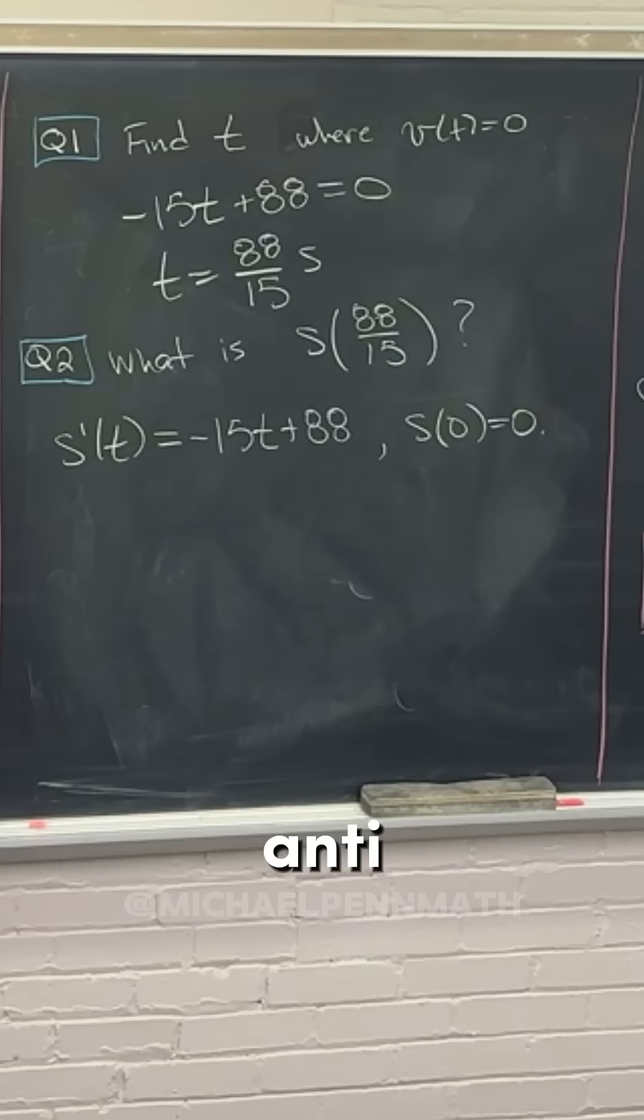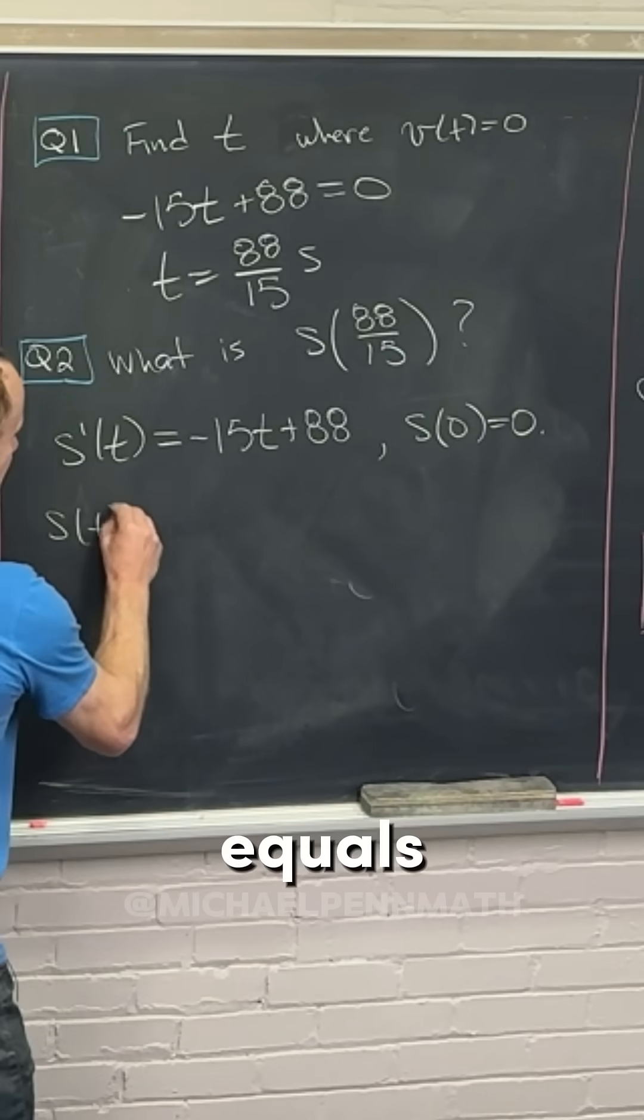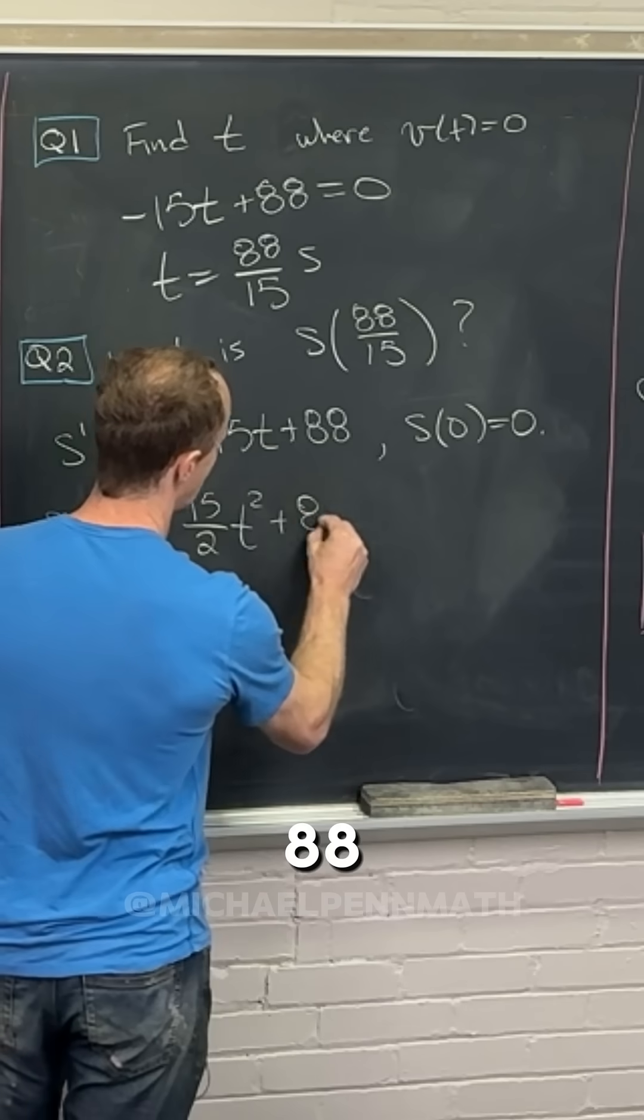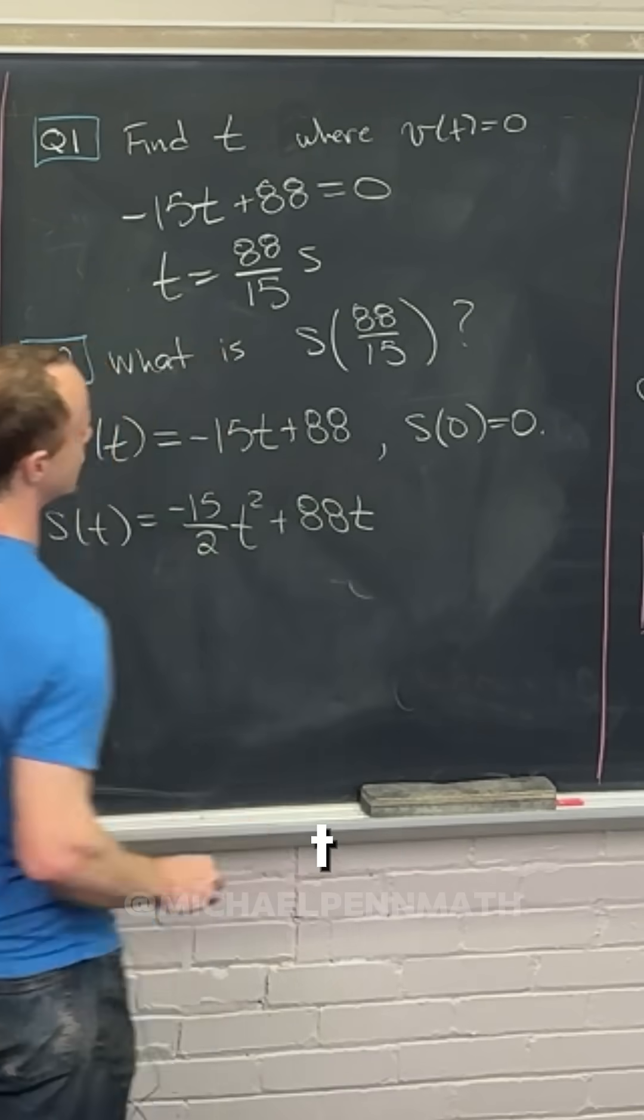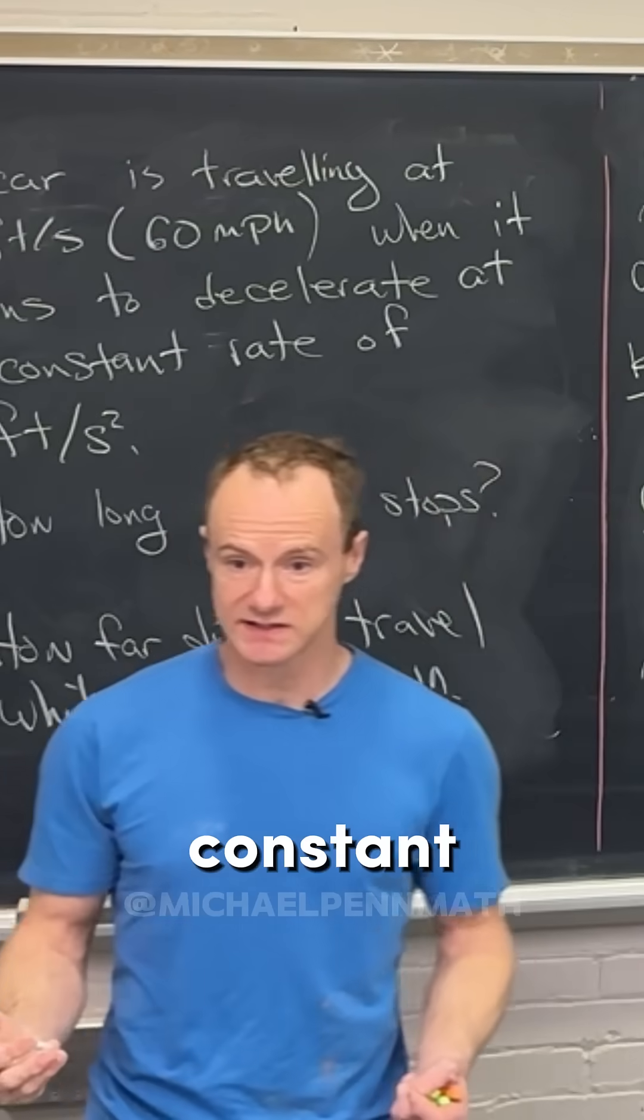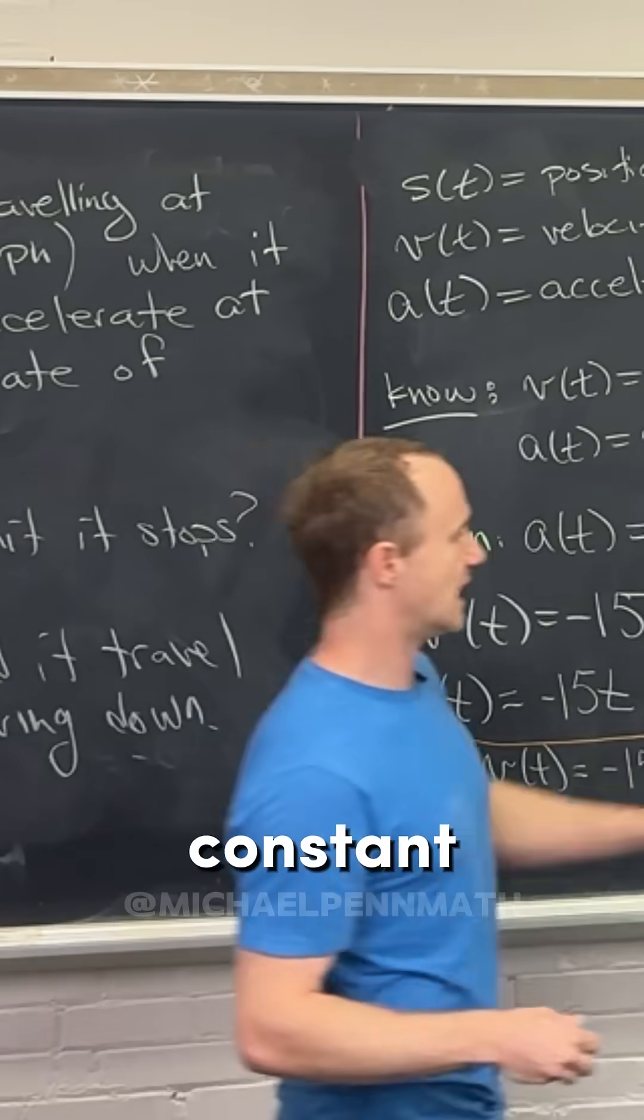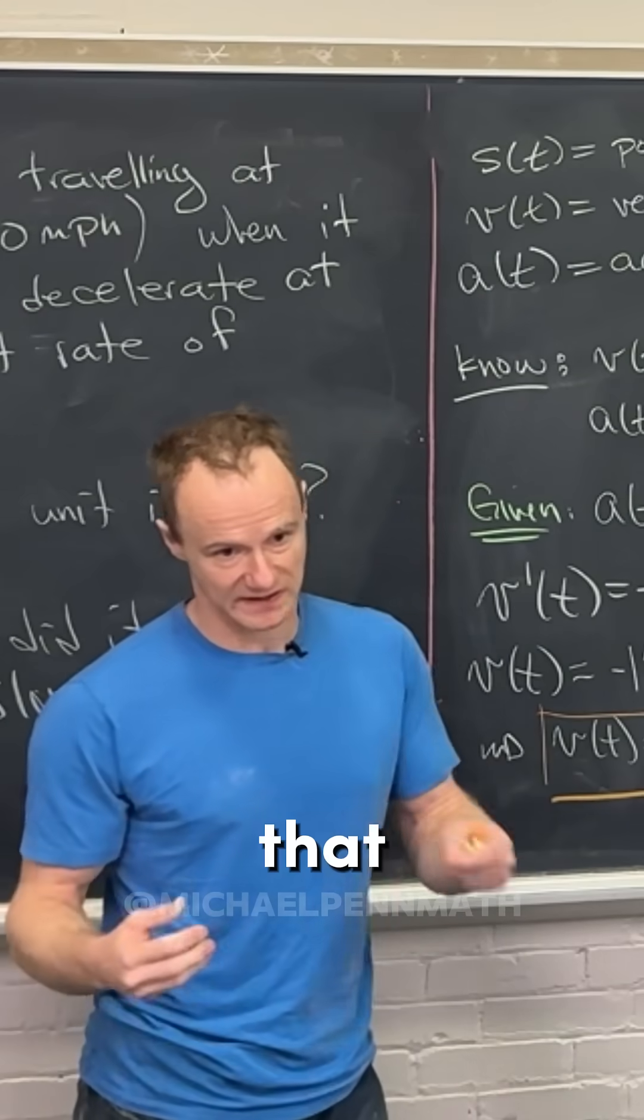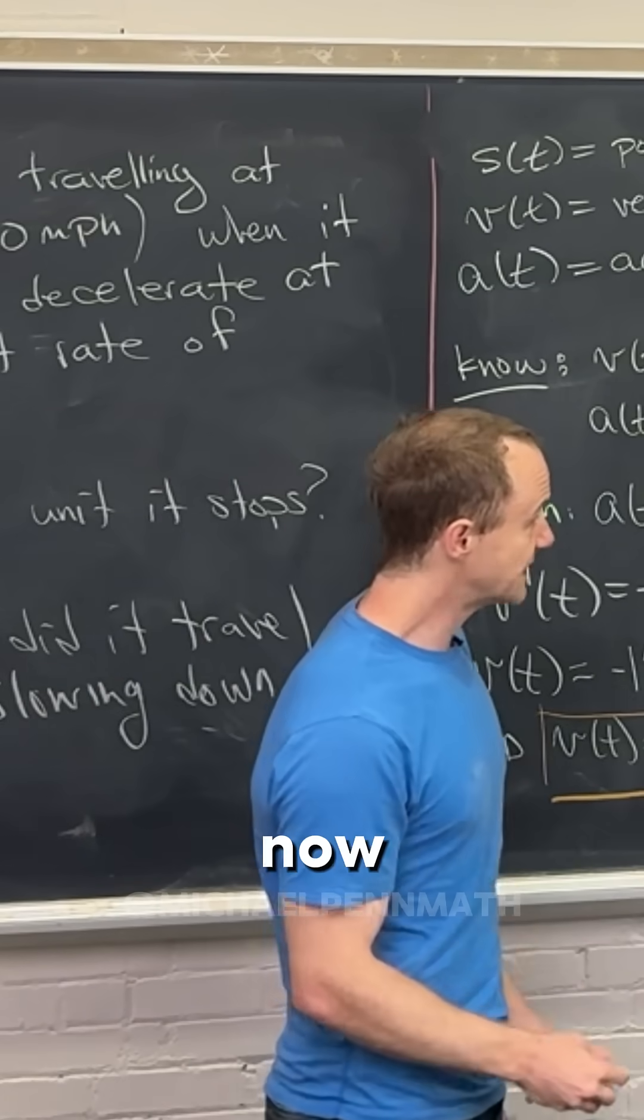But now we can take the antiderivative here. We have S of T equals, so it's going to be minus 15 halves T squared plus 88 times T. And then I would say plus a constant, but if you add a constant and then impose this initial condition, S of zero is zero, you'll see that constant has to be zero. And then now we're all set.